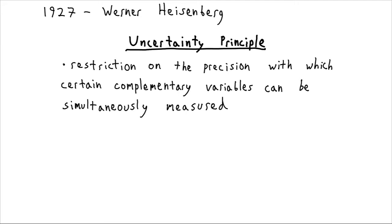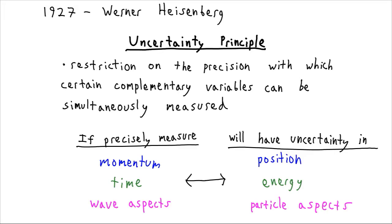Now, some examples of complementary variables: momentum and position. If you know very precisely the position at which a particle is located, then its momentum becomes highly uncertain, and vice versa.